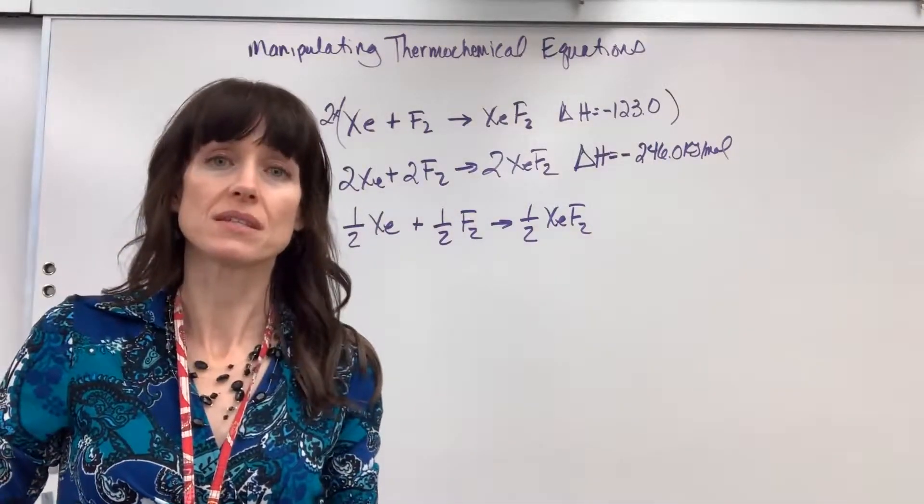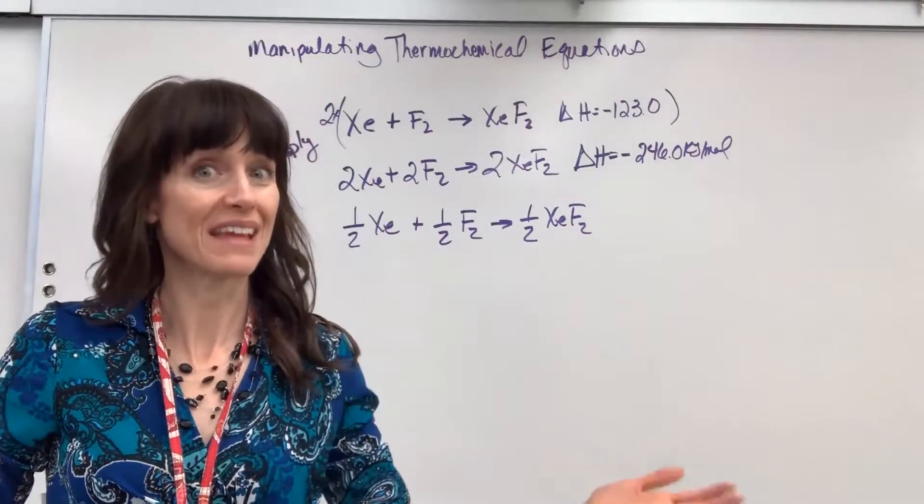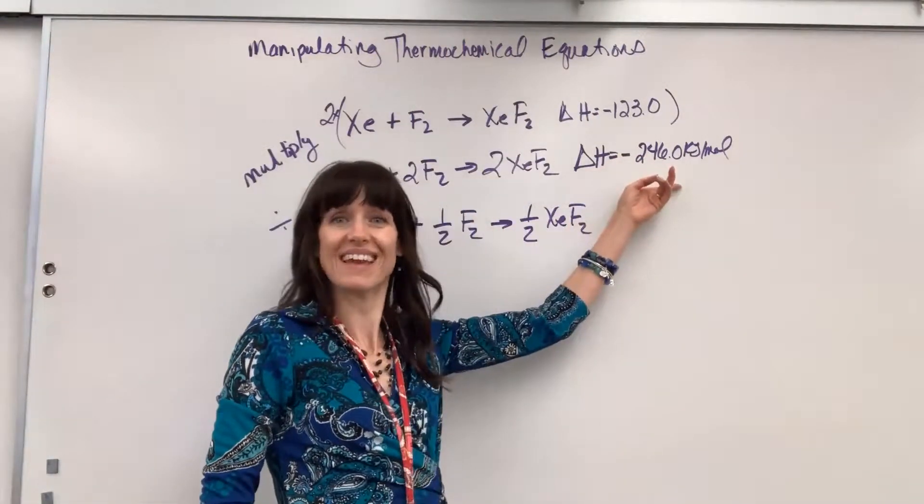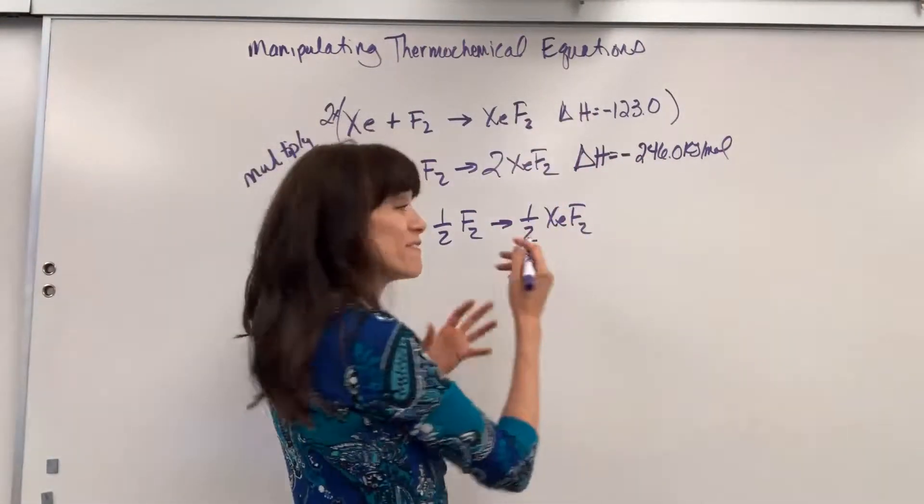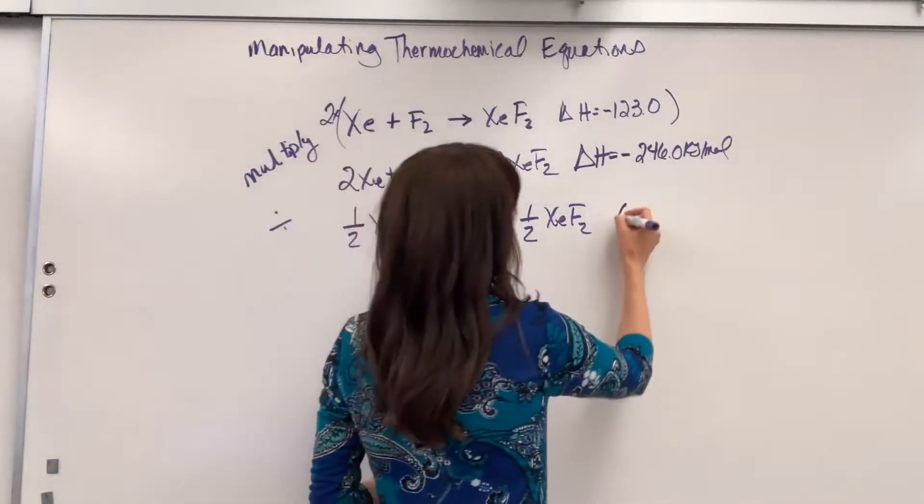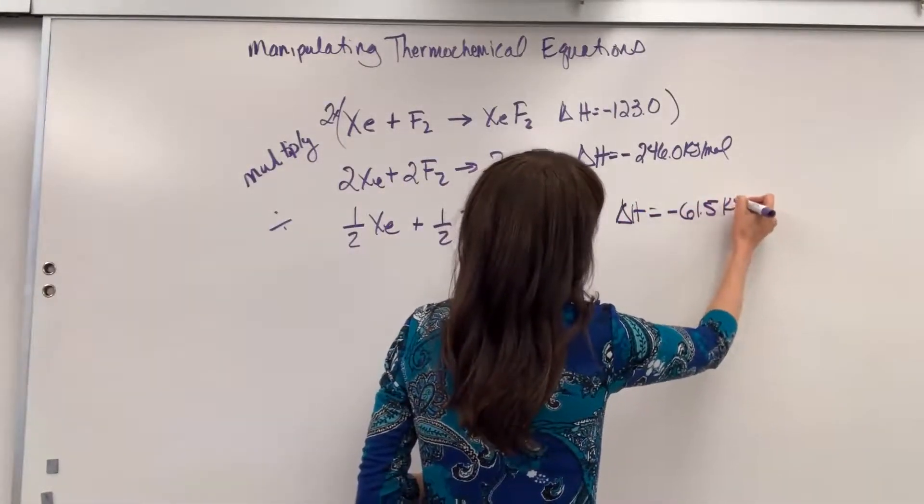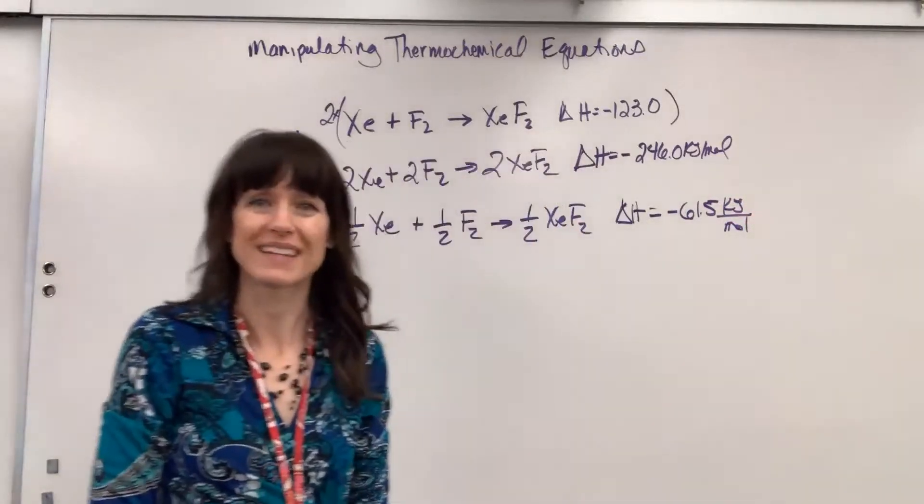So half the substance is going to release half the energy. Whatever you do to the reaction, you do to the delta H, the enthalpy. So if we divide that by two, delta H is going to be negative 61.5 kilojoules per mole.